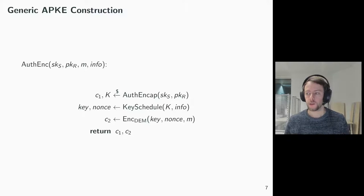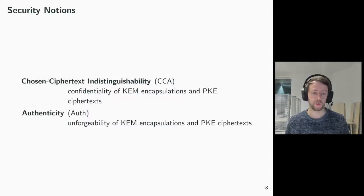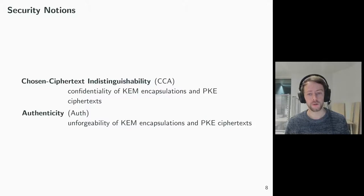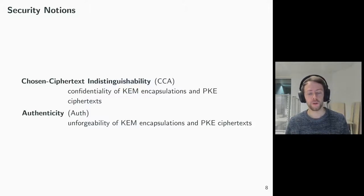Now let's discuss what these security properties are. We prove two kinds of properties. First, chosen ciphertext indistinguishability, which covers confidentiality of KEM encapsulations and PKE ciphertexts. And second, authenticity, which covers unforgeability of KEM encapsulations and PKE ciphertexts.